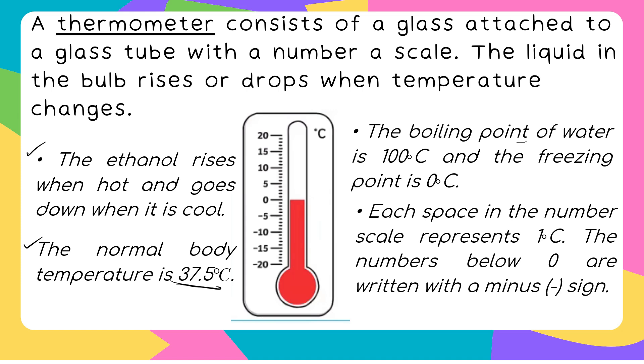Ano ba yung the boiling point? When we say boiling point of water, ito yung kumukulo, umaabot ito ng 100 degrees Celsius. At yung freezing point naman, yung nag-yayelo, ibig sabihin 0 degrees Celsius. What more kapag naging negative? Negative 20 degrees Celsius, ibig sabihin sobrang lamig na sa isang lugar. Each space in the numbers represents 1 degree Celsius. The numbers below 0 are written with a minus sign, or negative. Sa Pilipinas ba, nag-negative ang temperature? Hindi, kasi mainit ang ating temperatura sa Pilipinas.